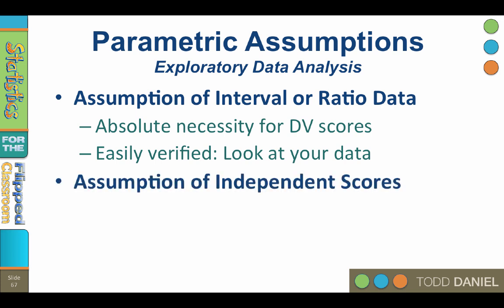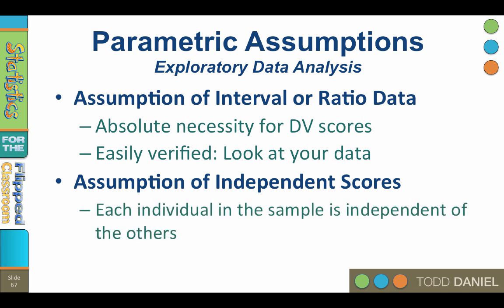The assumption of independent scores: each individual in the sample should be independent of the others. You do not have before and after scores, or people in one group influencing people in another group. If this assumption is violated, you can still use parametric statistics, but you need to switch to a repeated measures design. Or if you have potential confounds or covariates, you have to control for that in your research methodology as well.